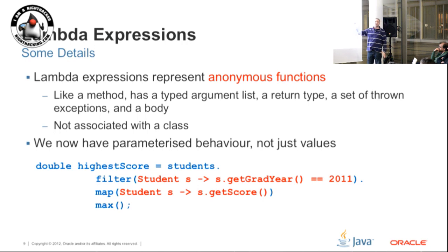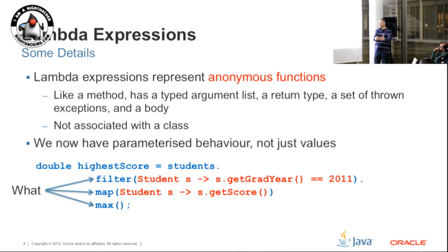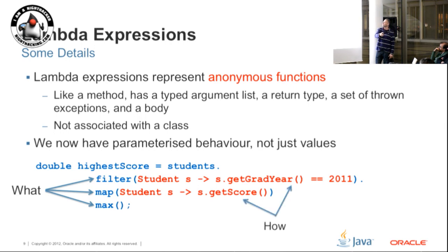The really important thing is that we're now adding to Java a simple way of parameterizing behaviour as well as values. Using a lambda expression you can now pass the way that you want something to happen, rather than just a value to process with your method. We're saying we've got our collection of students and we want to filter it, map it, and then perform a max operation - that's saying what we want to do. The lambda expressions say how we want to do that. That's the big thing: the separation of the 'what' from the 'how'.